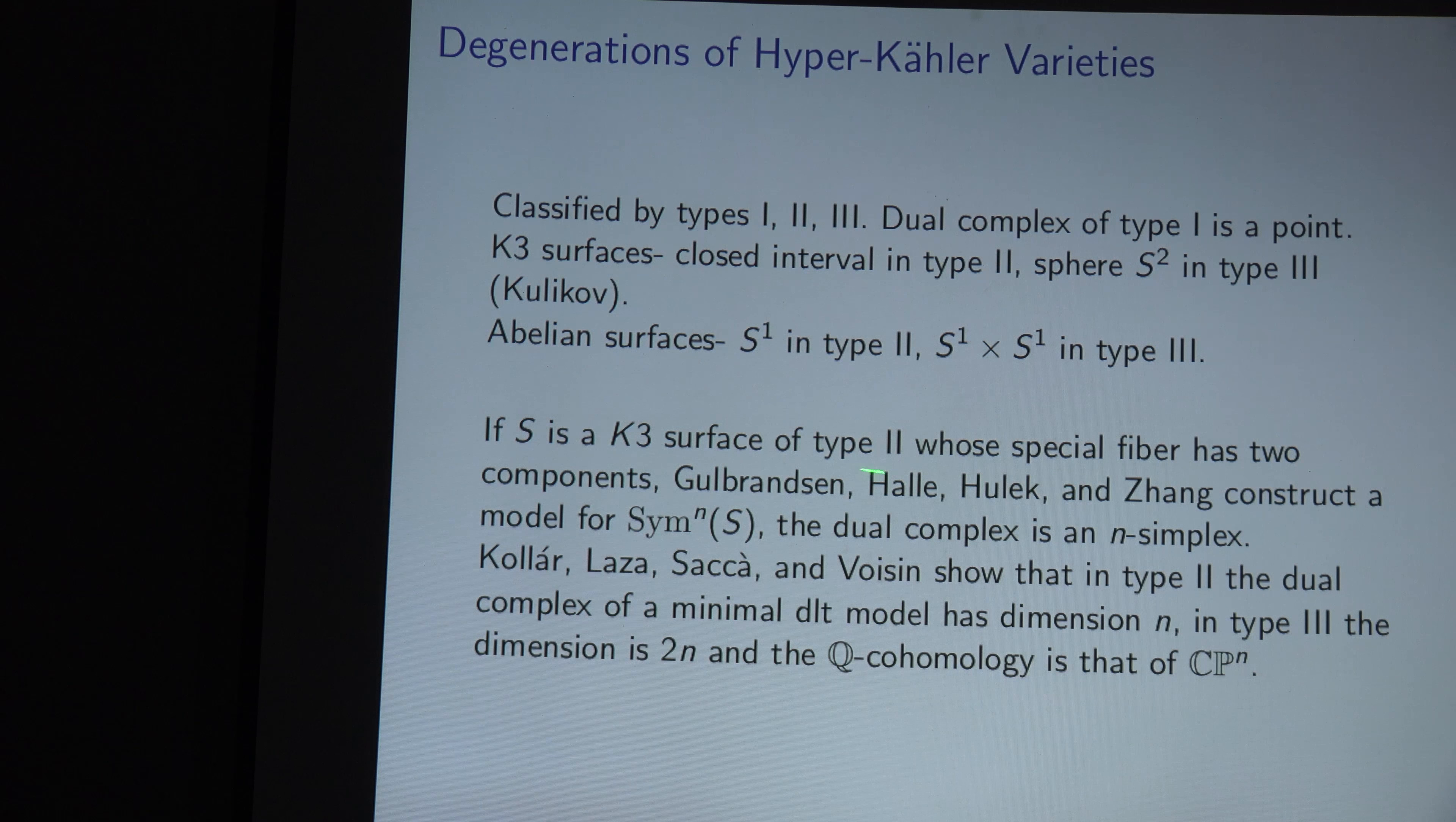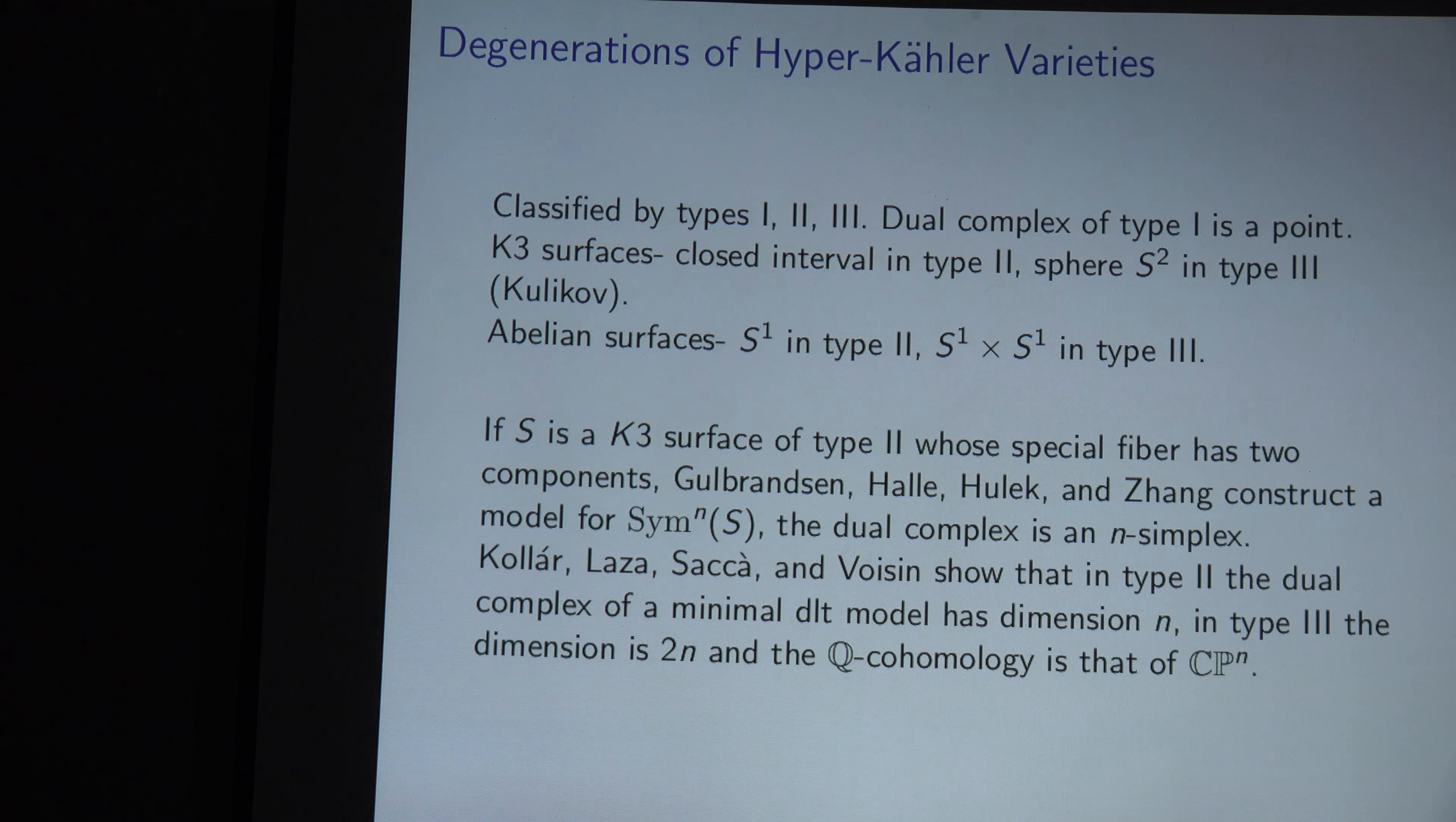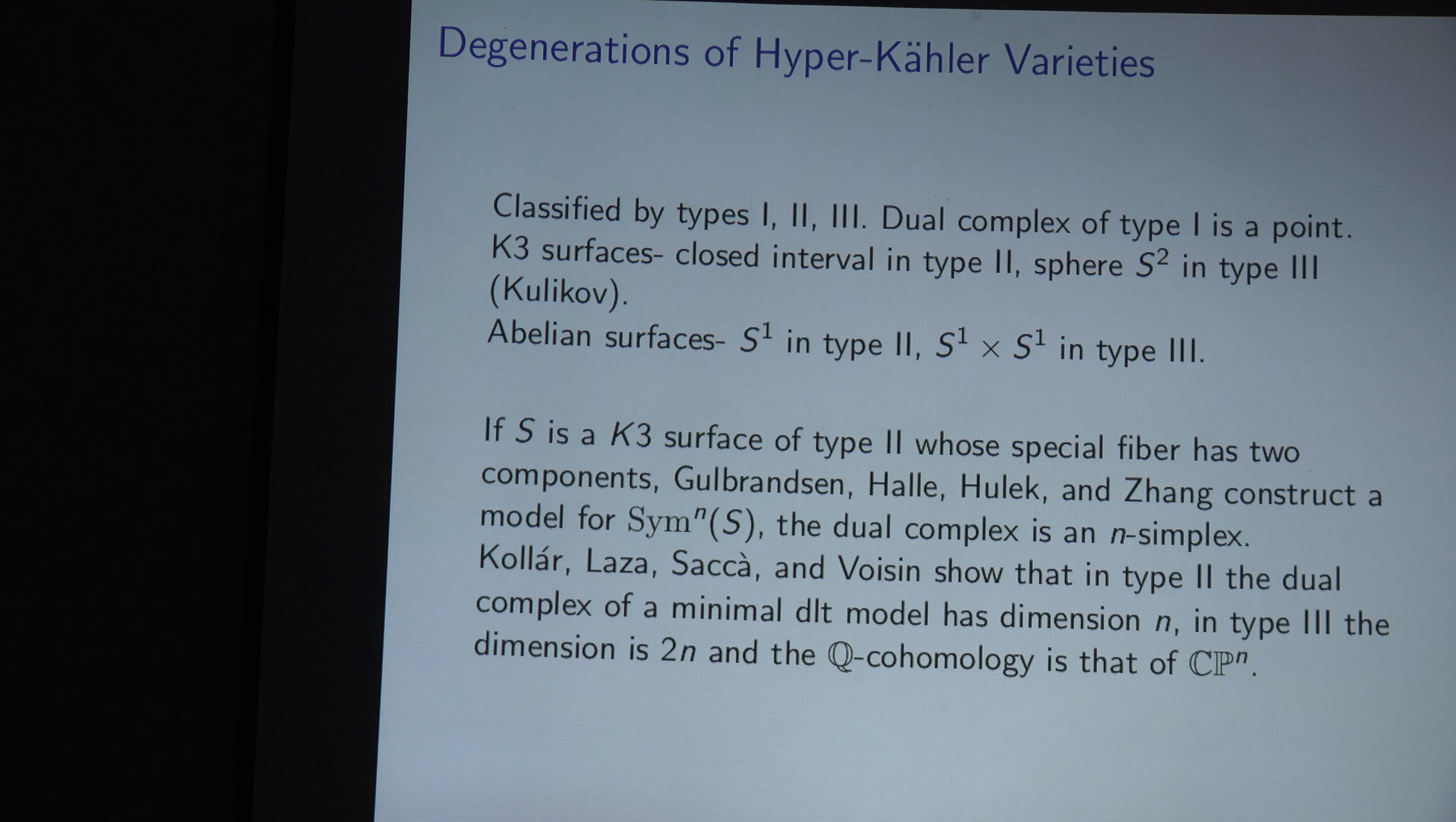Okay. So, so there's been some recent work on this problem. So for a type two K3 surface, where the special fiber has two components, Gulbrandsen, Halle, Hulek and Zhang, actually constructed a model for the Hilbert scheme using GIT. So they actually made a moduli problem that extended over R, and they found that the dual complex was an n-simplex. So for, using very different techniques, so Kollár, Laza, Saccà, Voisin, showed that in type two, the dual complex of the minimal DLT model has dimension n. I think they, they probably also showed that it has trivial reduced cohomology, but I didn't see it in the paper where I was writing these notes, but I think they, I mean, it certainly falls from their techniques. And I'm sure it's in the paper somewhere. And then in type three, they showed that the dimension is 2n and the reduced cohomology is that of CP^n. And so CP^n is actually pretty significant here because, so I believe it's known, due to work, I think, with Hwang, that if you have a holomorphic fibration of a hyperkähler manifold over something of the complex of dimension n, that base has to be CP^n.